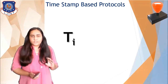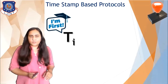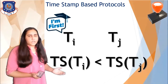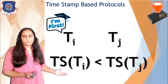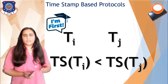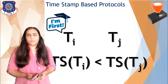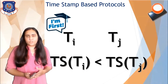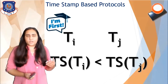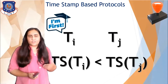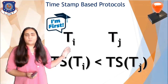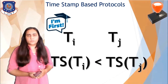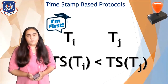If transaction Ti arrives first and transaction Tj arrives second, then the timestamp of Ti will be less than the timestamp of Tj because Ti came first. You can assign timestamps based on the system clock, noting the time and date each transaction arrives, or you can use a counter variable that counts the number of transactions. For example, if this is the 10th transaction, it gets a timestamp of 10, and Tj would get 11 if it comes after. There are several ways of assigning timestamps.